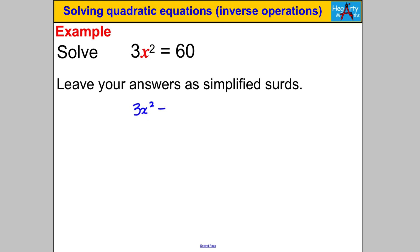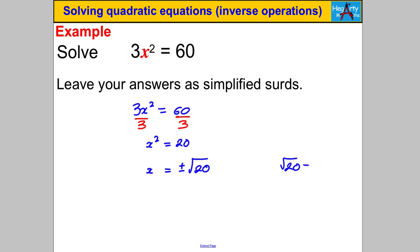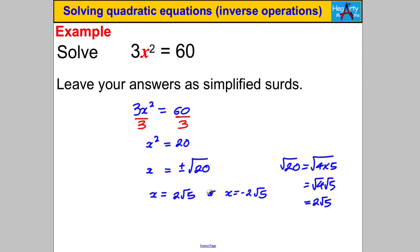Last one: 3x² = 60. Divide both sides by 3 to get X² = 20. Taking square roots: X = ±√20. Simplify: 20 = 4 × 5, so √20 = 2√5. Therefore X = 2√5 or X = −2√5. That's it for this video — thanks for watching.